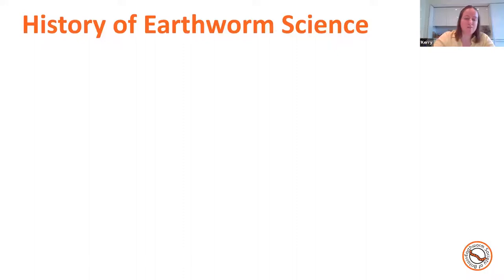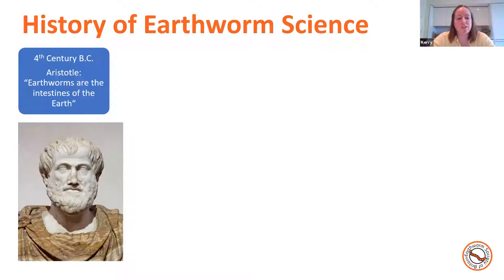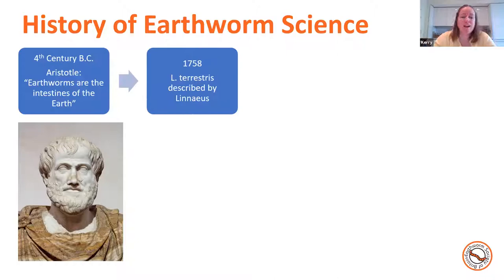I want to go through a little bit of the history of earthworm science to allow you to realise what we do and don't know about them, and what Charles Darwin would have known when he first started. Over 2000 years ago, Aristotle — kind of the first biologist in the world — said that earthworms are the intestines of the earth. So even that long ago, people knew how important earthworms are for our soils.